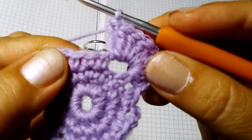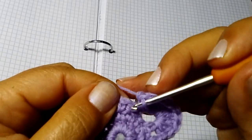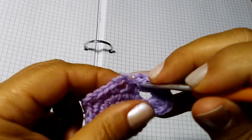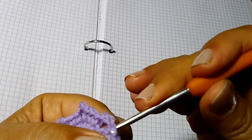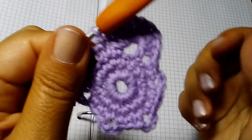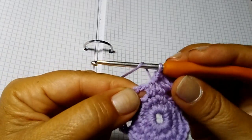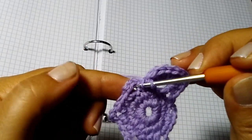Nona. Adesso chiudiamo con una maglia bassissima nella seconda di queste 3 maglie basse: prima, seconda. E abbiamo riempito il nostro primo petalo.